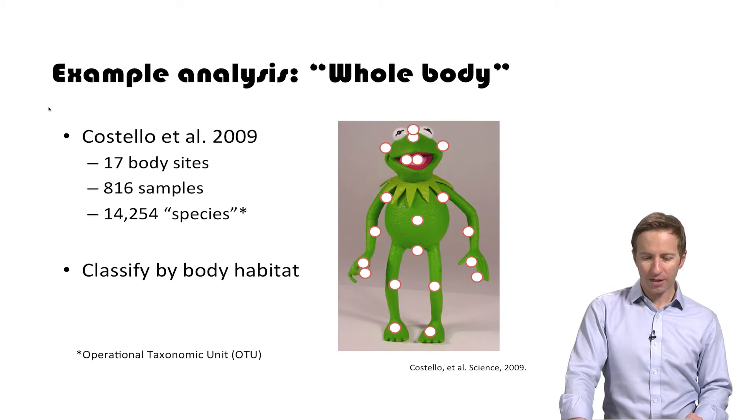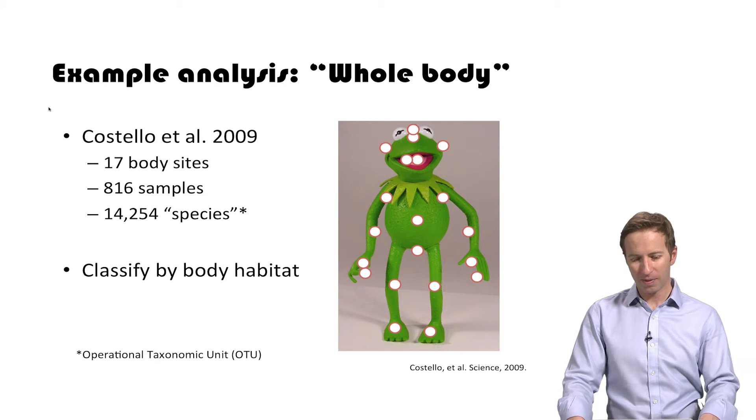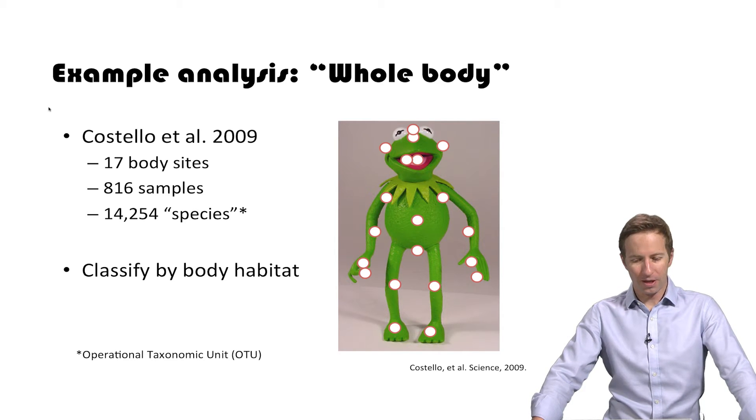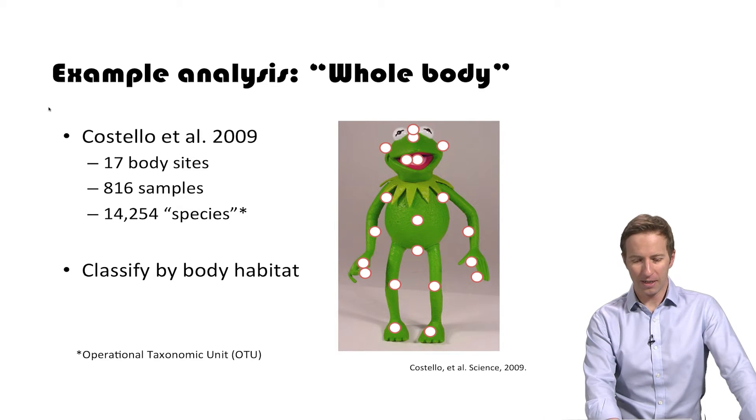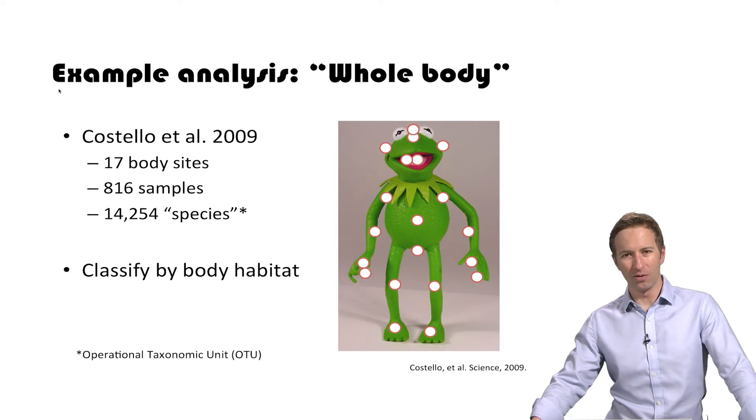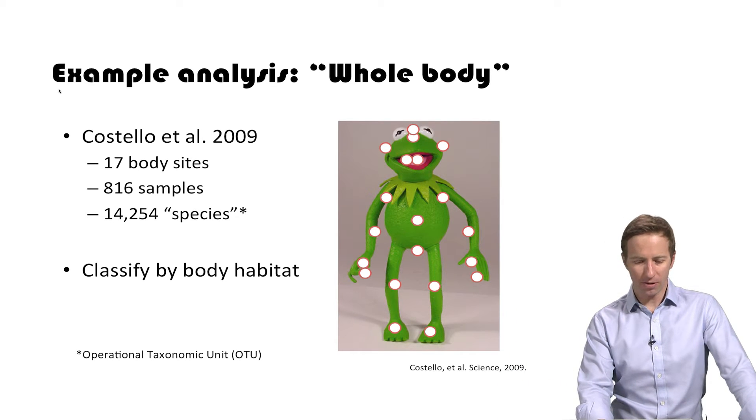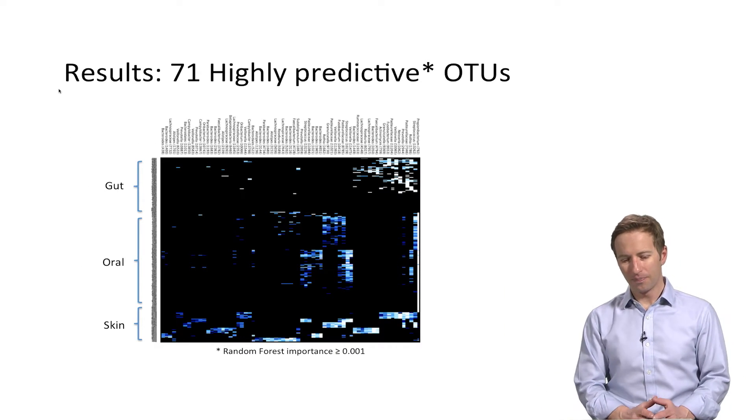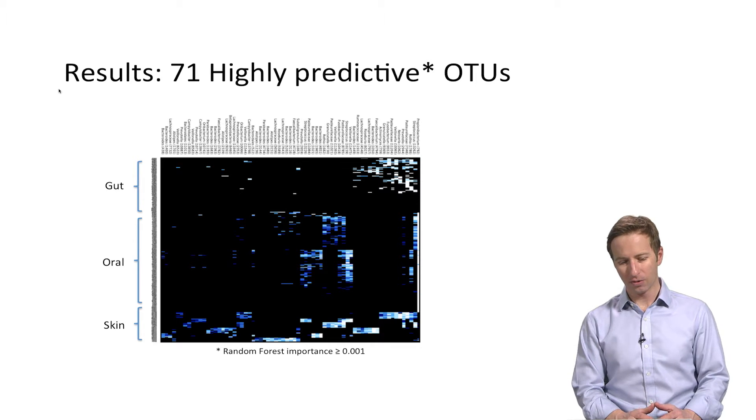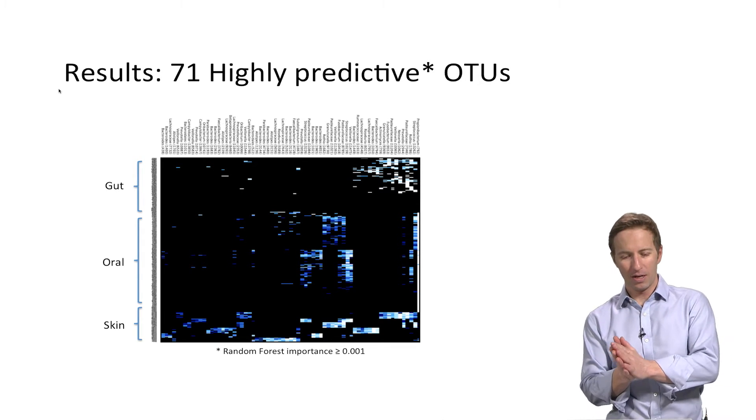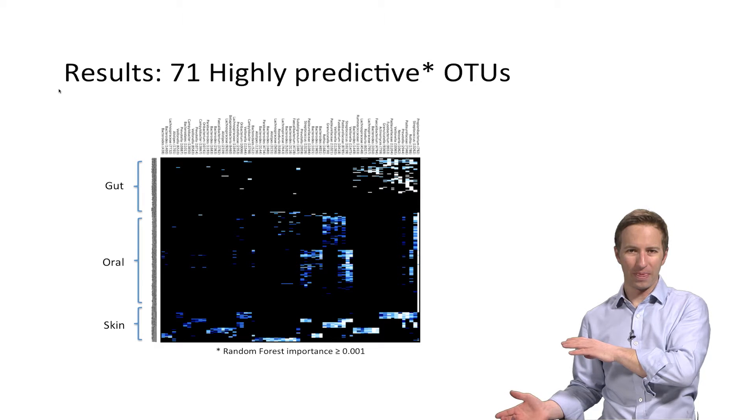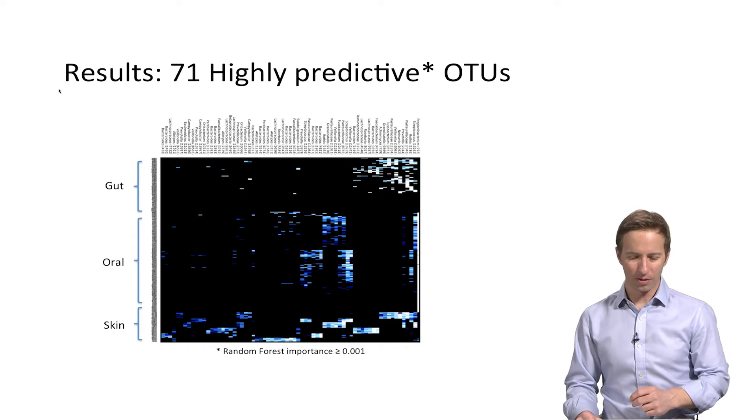So here's an example analysis from the whole body data set that was published by Liz Costello and Rob Knight in 2009. They sampled 17 different body sites on the human body and they had estimated that there were around 14,000 OTUs or species. And what we're trying to do here is classify the samples by body habitat using machine learning. So what I did for this was to break the samples up into the broad body habitat so there's gut, oral, and skin. And then ran it through a random forest classifier which is built into Chime.